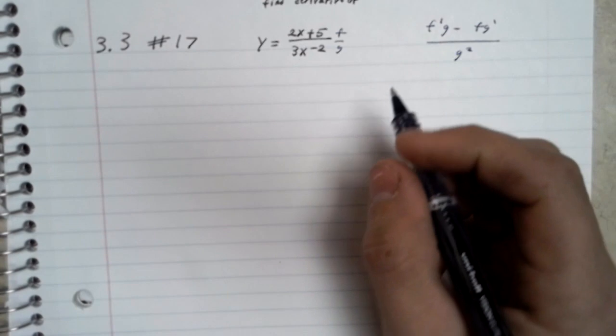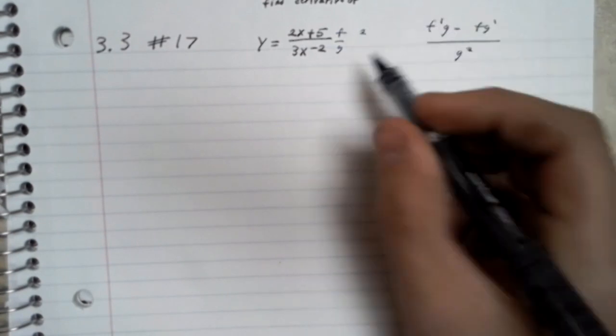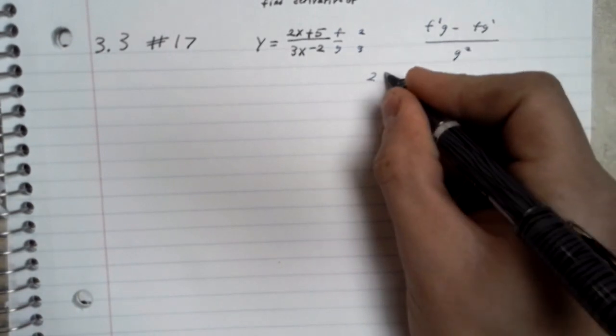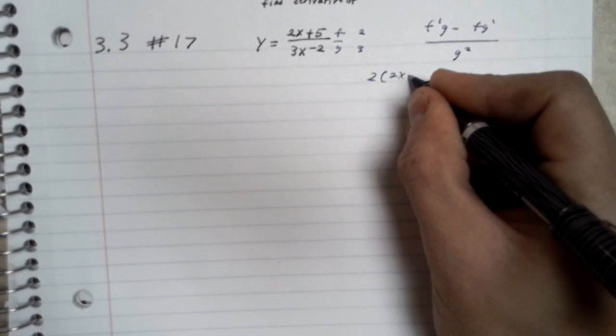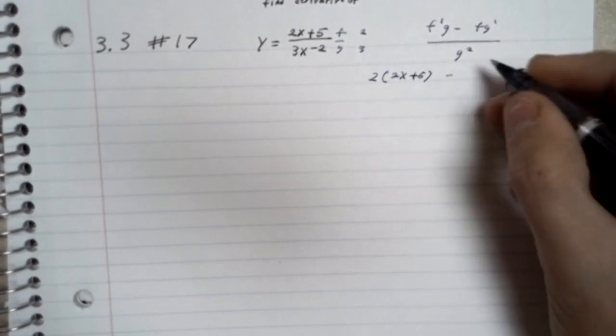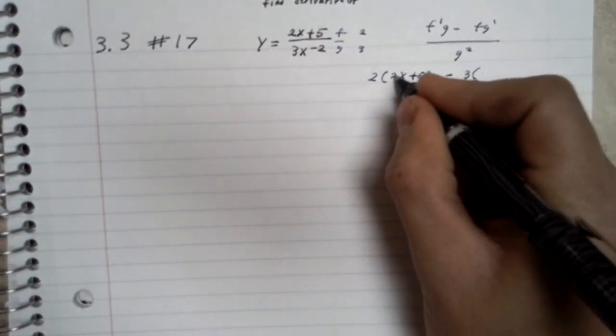The derivative of the numerator is 2, and the denominator is 3. So, we'll have to... Check what you just... Yes.